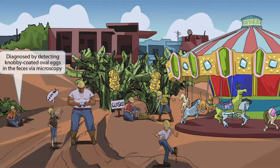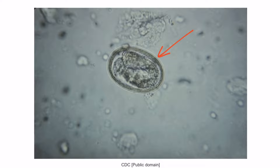We've added another construction worker who has found some interesting colored rocks on the ground. The rocks resemble eggs, and this is here to help you remember that Ascaris lumbricoides is diagnosed by detecting knobby-coated oval eggs in the feces via microscopy. You don't need to memorize the exact structure of an Ascaris lumbricoides egg — you just need to recognize it's a parasite egg. You'll almost always be given a clinical scenario suggestive of a diagnosis, and the image of the egg will confirm you're dealing with a parasite.